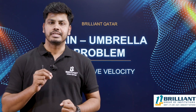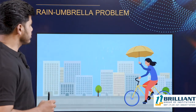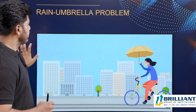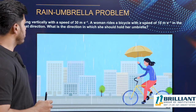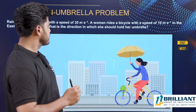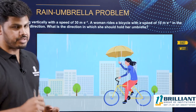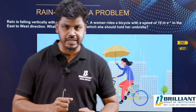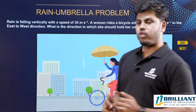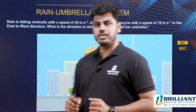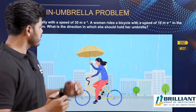Rain umbrella problem with relative velocity. Let us come to the question. Rain is falling with a speed of 30 meter per second. A woman rides a bicycle with a speed of 10 meter per second in the east to west direction. What is the direction in which she should hold her umbrella?